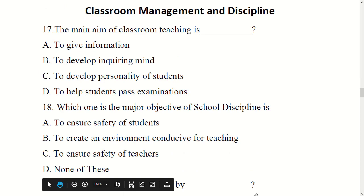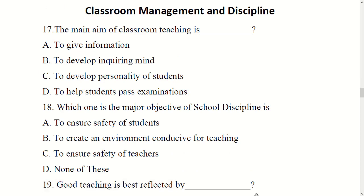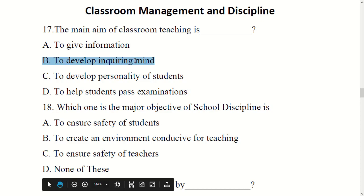The main aim of classroom teaching is to develop an inquiring mind. Options were: to give information, to develop inquiring mind, to develop personality of student, or to help students pass examinations. The right option is B: develop inquiring mind.